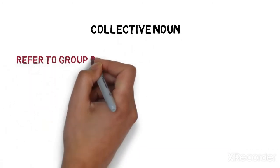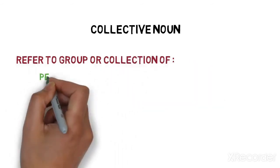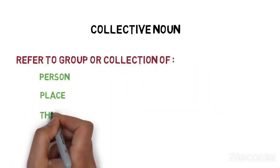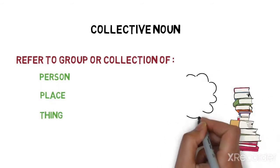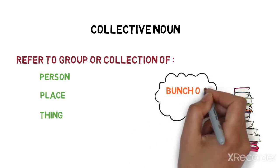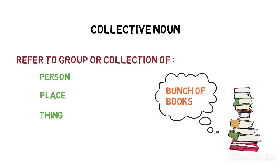Then we discussed about collective nouns. Collective noun refers to group or collection of same kind of person, place, or things. Example, bunch of books. So bunch is a collective noun for books.